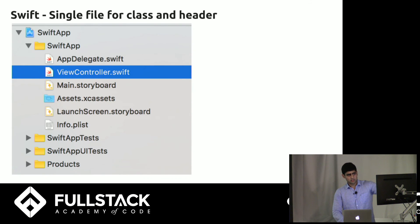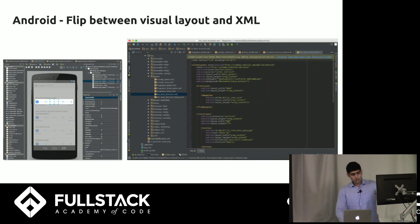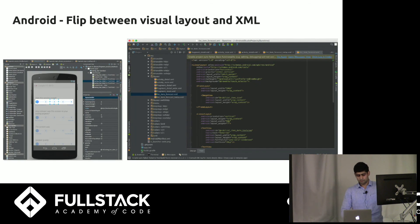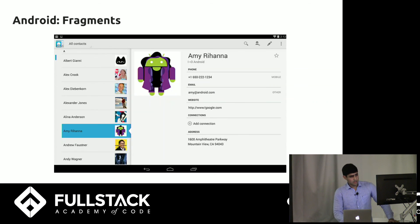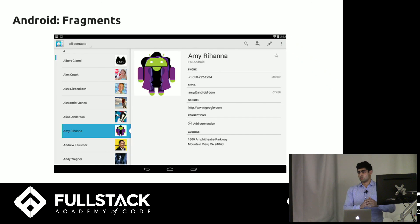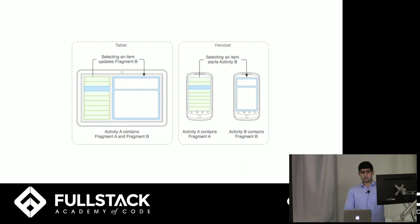Just a couple of differences: Swift doesn't have separate class and header files — you have a single file. On Android you have something similar, but you can flip between that and XML, which is really handy. And you have these things called fragments on Android, which let you create containers that you can reflow — so something on tablets might look different on phones, but you're using the same components.